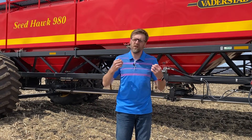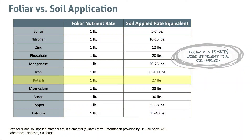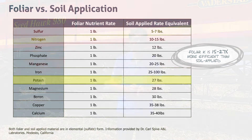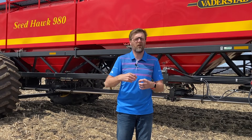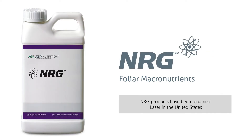So how can we manage this in the growing crop? Well, we can manage this using a foliar potassium product. Foliar potassium products are going to be somewhere between 15 to 27 times more efficient than a soil-applied fertilizer. At ATP we have two main foliar potassium product lines: the Relief family and the Energy family. For more information on both families, please feel free to visit our website. Thank you.